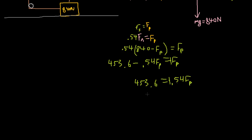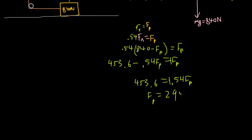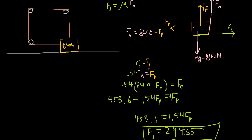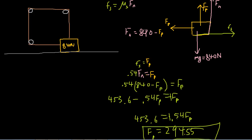Solving for the force of pulling: 453.6 divided by 1.54 gives us approximately 294.5 newtons. Let's type that into the website and see if we get it right — and we do! So this is the correct answer. Note that you might have different numbers for 840 and 0.54, but the method is the same. I hope this helped you understand the problem better.